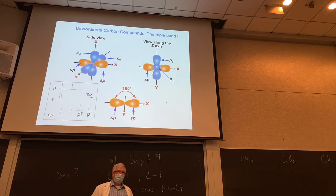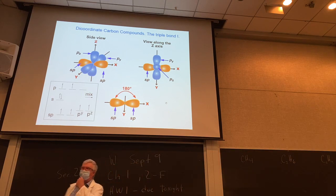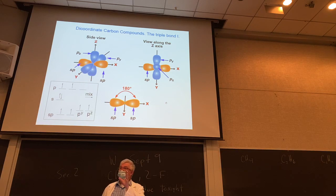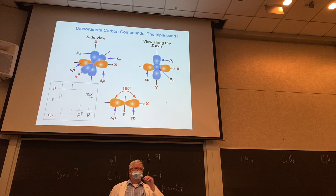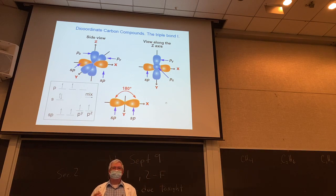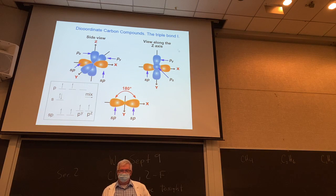What's next? Triple bond. For the test or quiz, you need to be able to draw geometry-wise these basic types of forms and say what hybridization is involved and what type of bonds are involved. It's a little bit of artwork to reproduce these things, but I'll help you out.